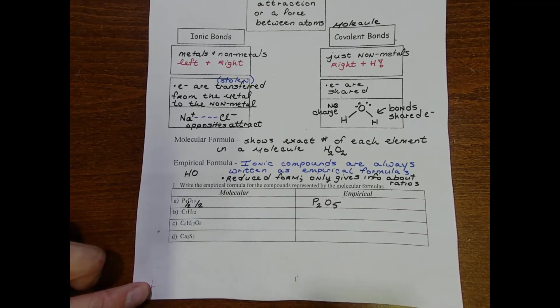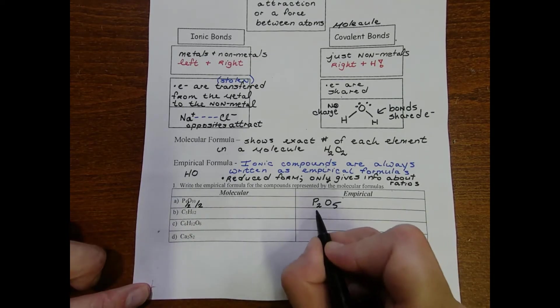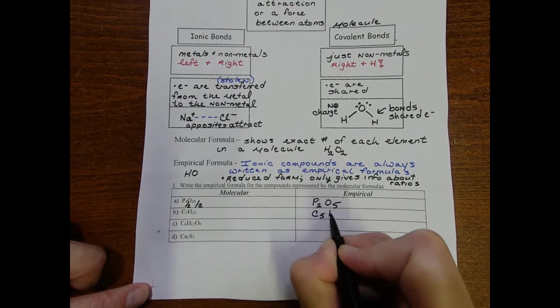C5H12 - well 5 and 12 don't have anything in common, I can't really divide it, so its molecular and empirical formula are one and the same.